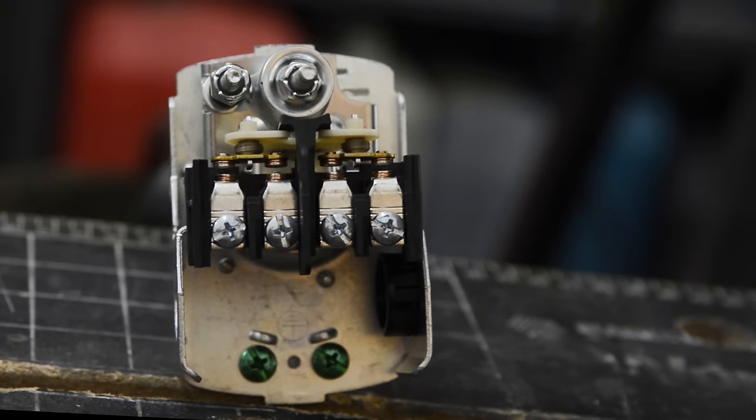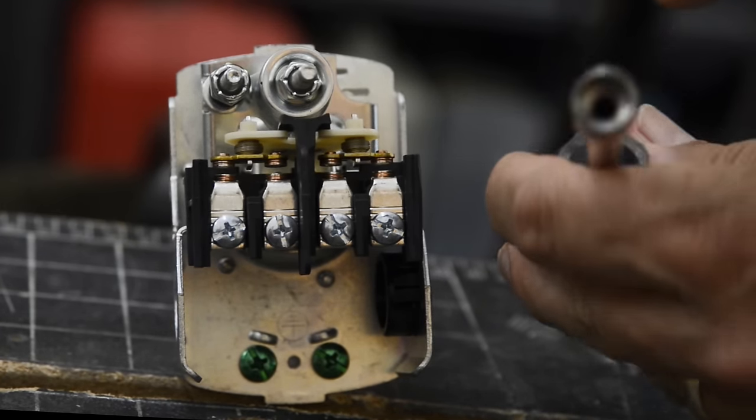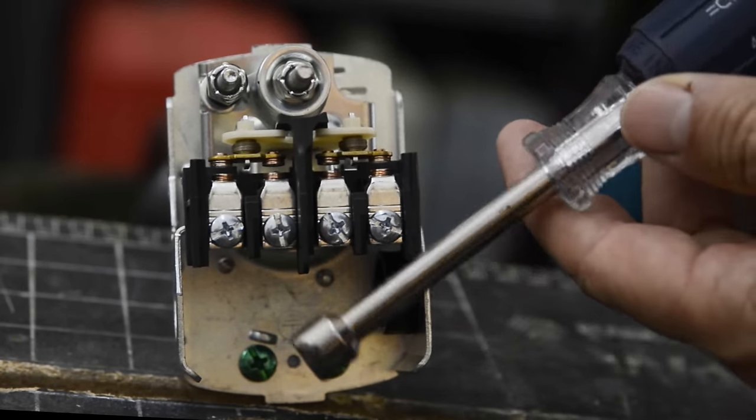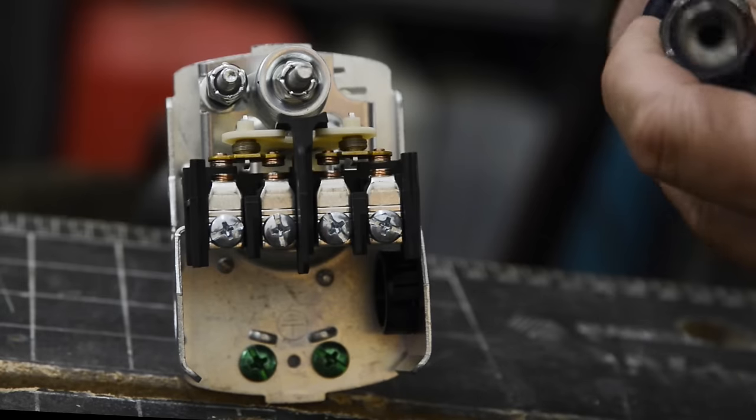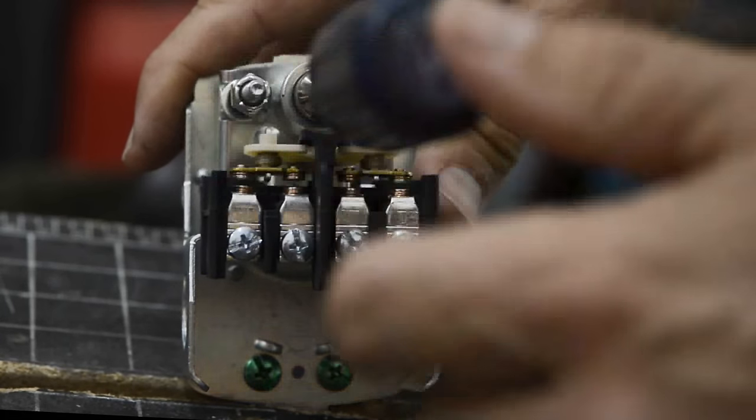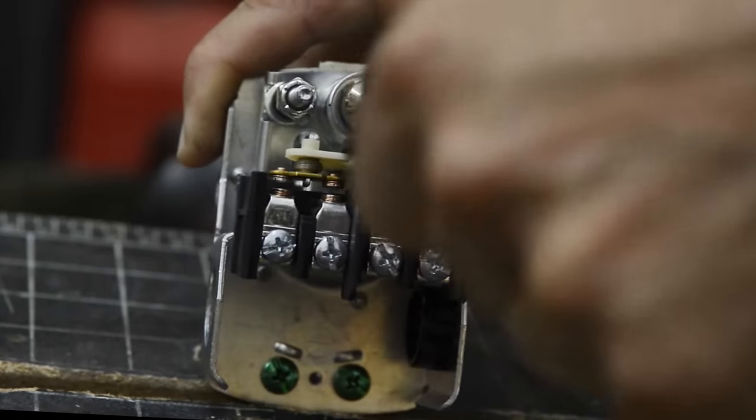When you're adjusting these screws, you want to have a nut driver that's hollow. I don't know if you can see that, but Craftsman's are. They have a hollow shaft, and that way it'll fit over the threaded rod, and you can adjust it counterclockwise or clockwise.